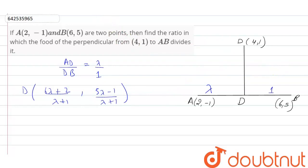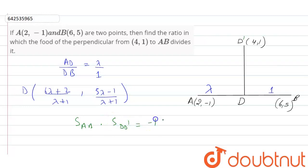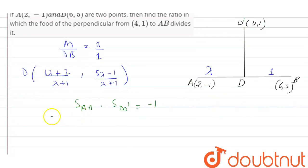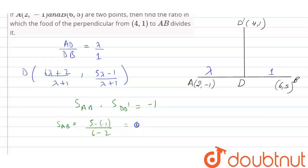Now, as we know the slope of AB, the product of slopes of AB and DD' is equal to minus 1, since they are perpendicular. The slope of AB, using the two-point formula, is Y2 minus Y1, that is 5 minus (−1) divided by 6 minus 2, which equals 6 upon 4.